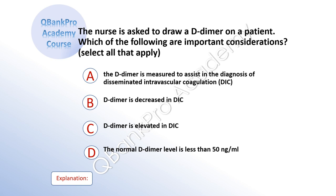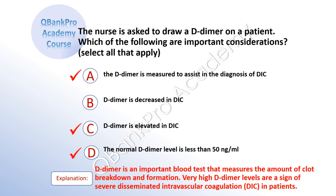The nurse is asked to draw a D-dimer on a patient. Which of the following are important considerations? Select all that apply. A, the D-dimer is measured to assist in the diagnosis of DIC. B, D-dimer is decreased in DIC. C, D-dimer is elevated in DIC. D, the normal D-dimer is less than 50 nanograms per milliliter. The correct answer is A, C, and D. Explanation: D-dimer is an important blood test that measures the amount of clot breakdown. Very high D-dimer levels are a sign of severe disseminated intravascular coagulation in patients.